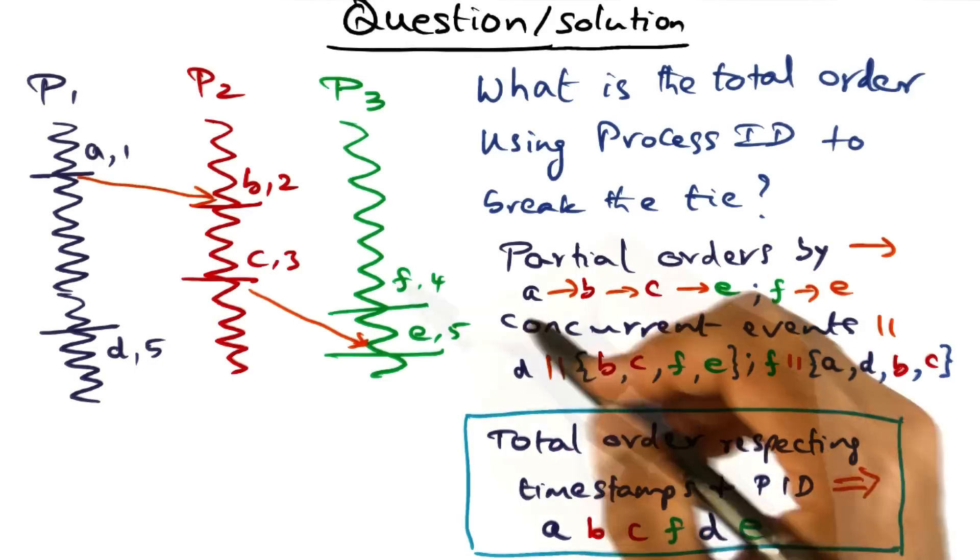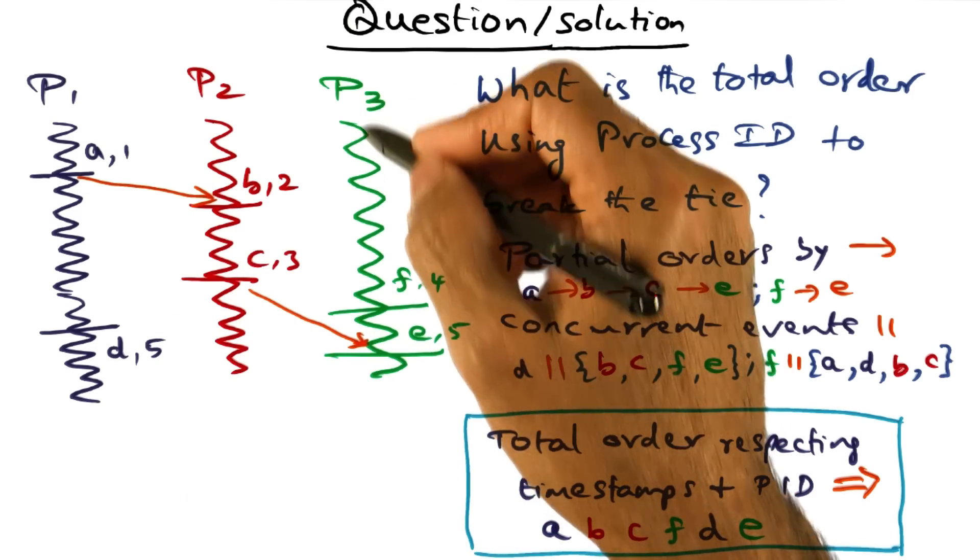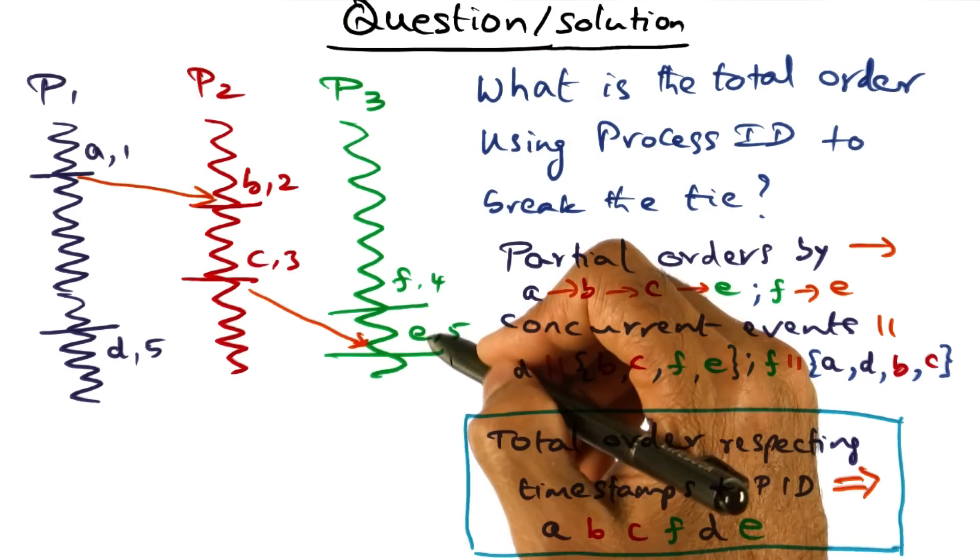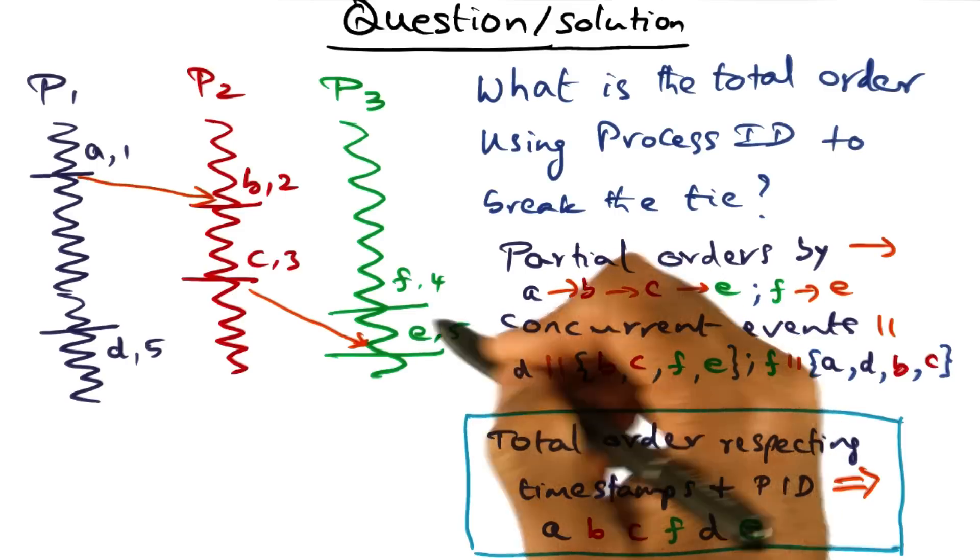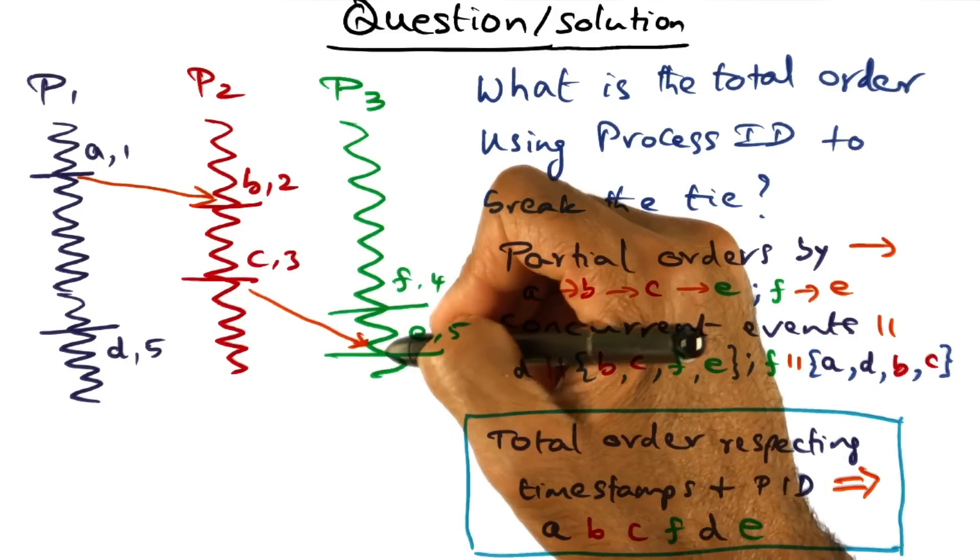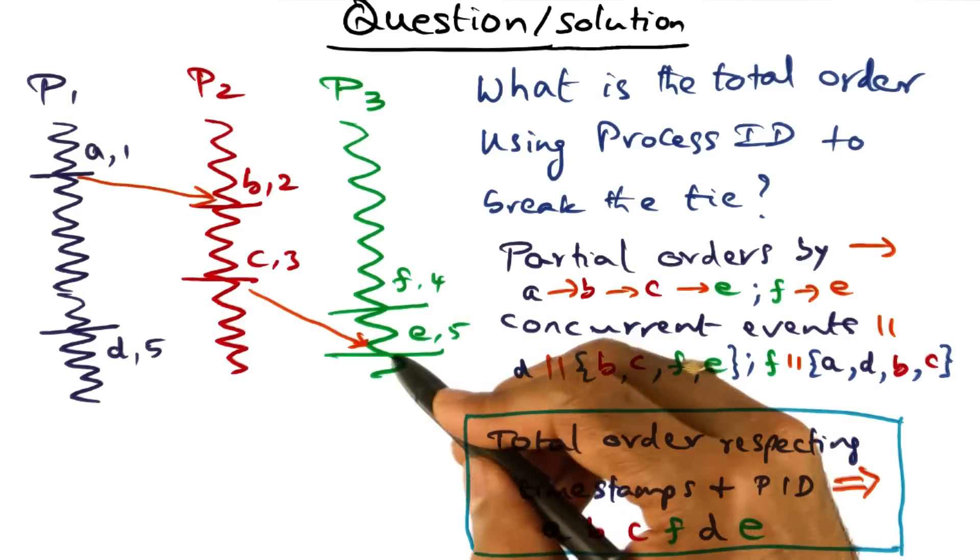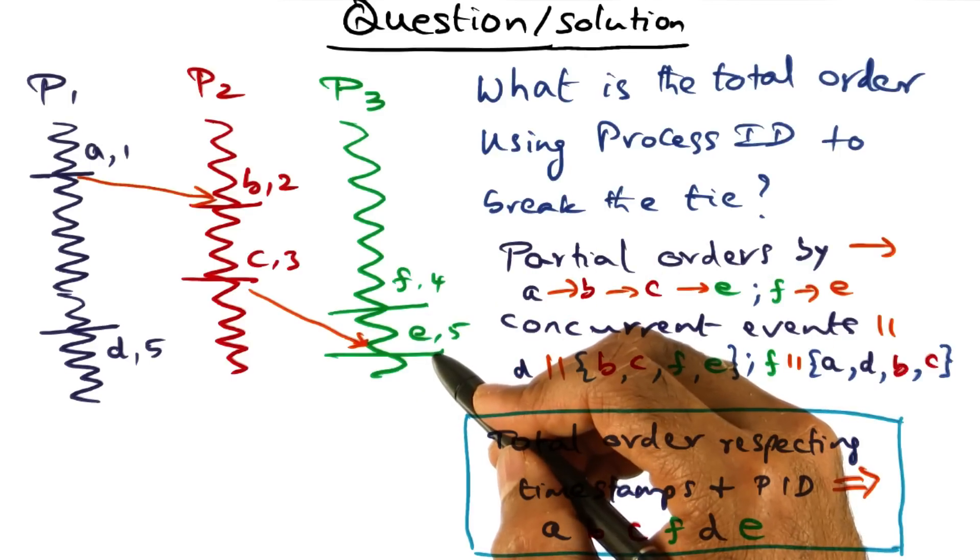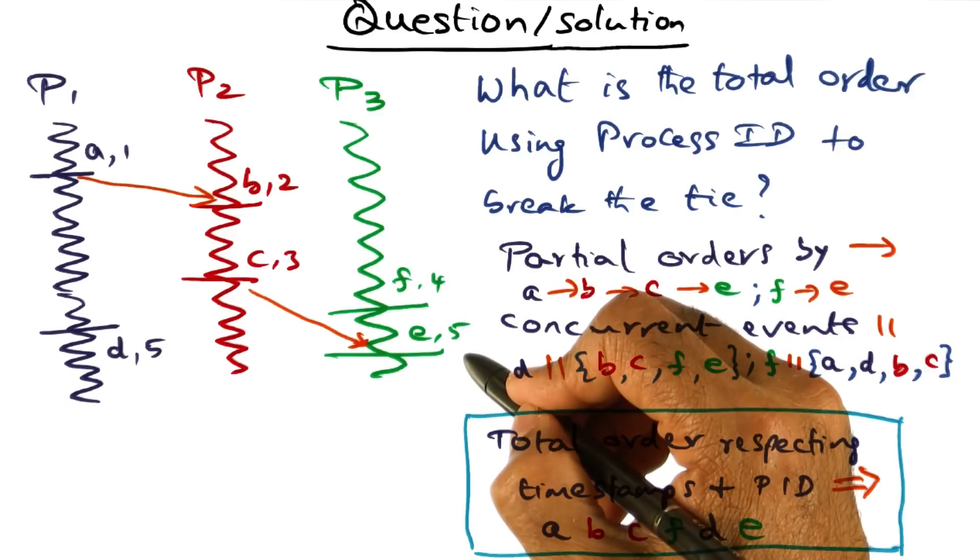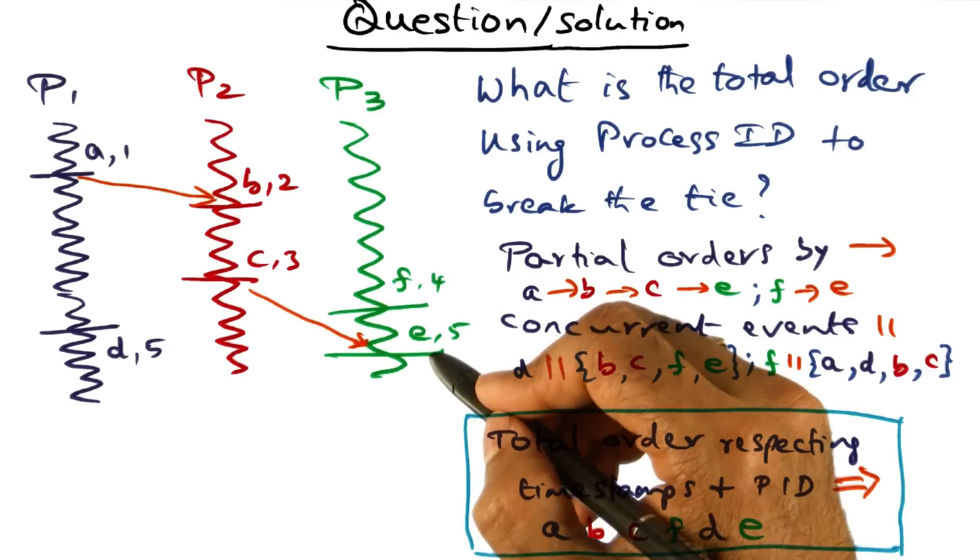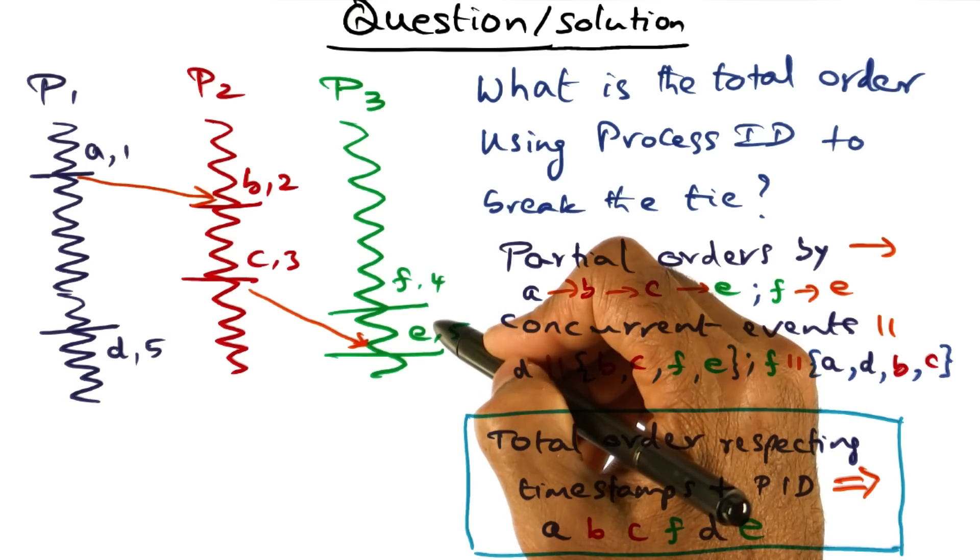So the real problem comes with F and D. Now the sequentiality of this process is what made the timestamp associated with E to be five. Because the message that came over here had a timestamp of three, but we associated a timestamp of five with E because the local event preceding E had a timestamp of four. So we picked five as a timestamp to associate with E so that the sequentiality of this process P3 is respected.